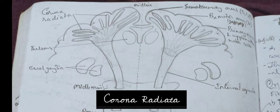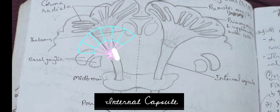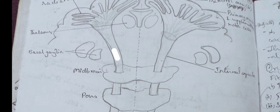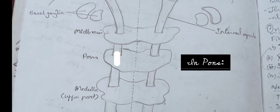Fibers from origin descend in a diffuse manner forming a fan-like structure called corona radiata. Corona radiata converges in the form of internal capsule. At the pons, fibers descend as compact bundles.